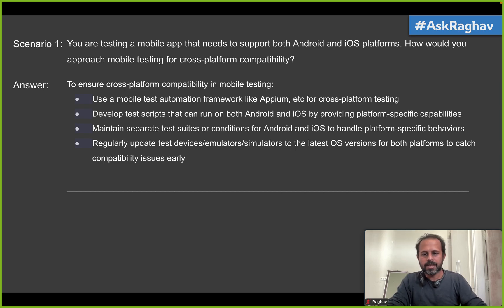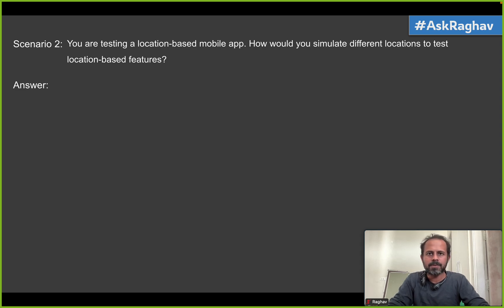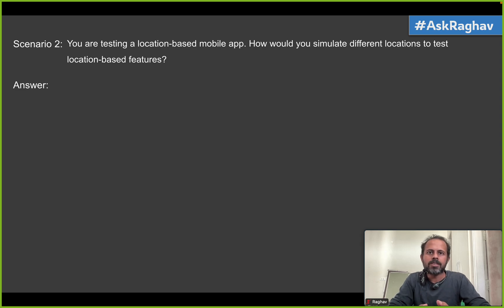That's how you can handle this particular scenario. Moving on to scenario number two: you are testing a location-based mobile app — how would you simulate different locations to test location-based features? This is a very common scenario because a lot of apps are based on location, or in other words, they have to work based on the user's location, give suggestions based on location, etc. So how would you handle this kind of scenario?